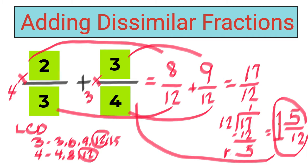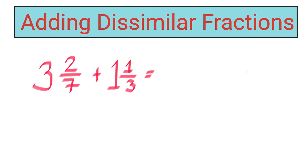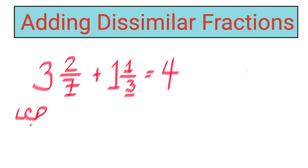I'm using the calculator to check, but it is very important for students to know how to solve even without a calculator. Now, what if the problem involves mixed numbers? The same procedure applies. All you need to do is add the whole numbers first: three plus one gives you four. Since the proper fractions of the mixed numbers are dissimilar, we need to get the LCD of seven and three. Sometimes you can multiply the numbers directly, but I'll use skip counting so you know the procedure well.